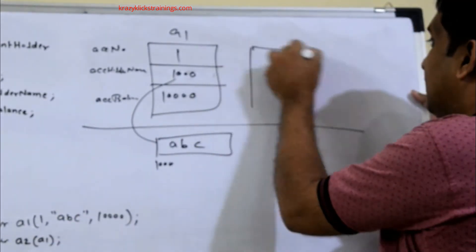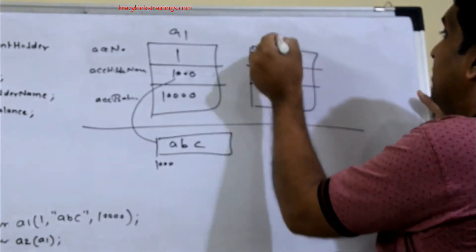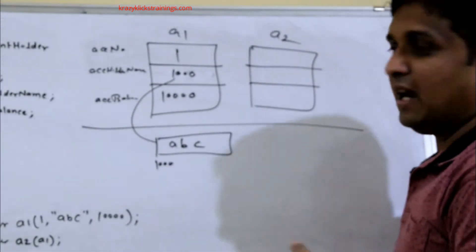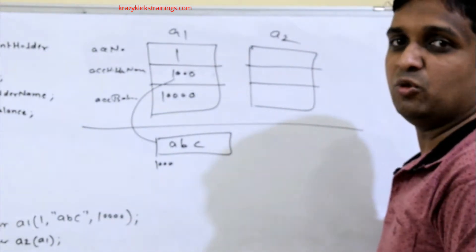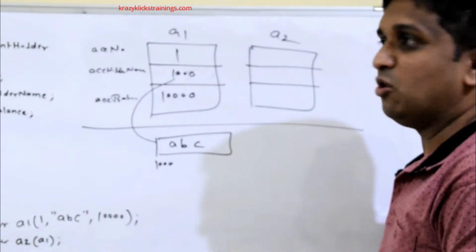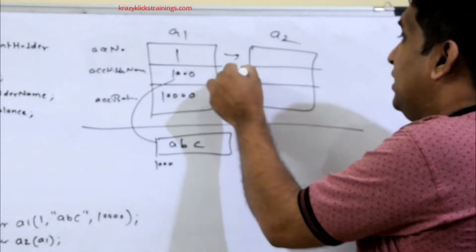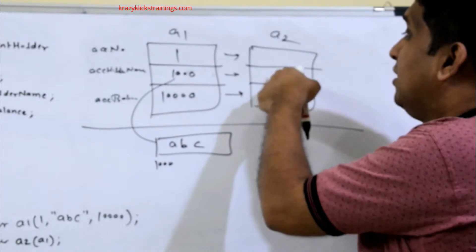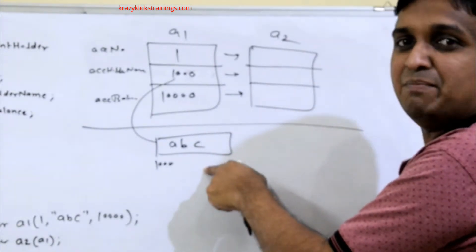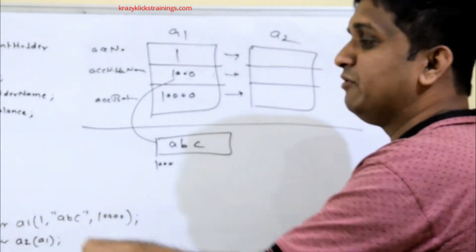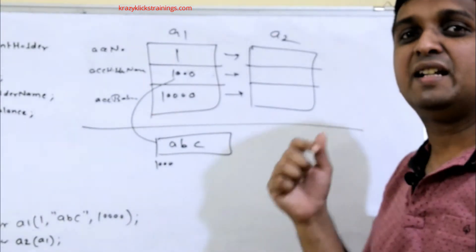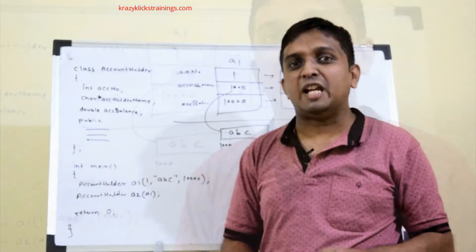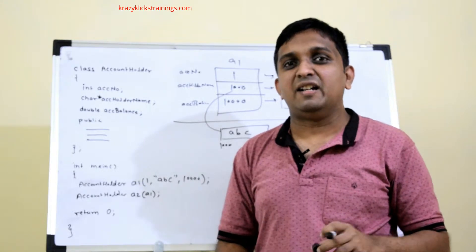When a2 object is declared, it takes separate 16 bytes and the compiler's copy constructor gets called. The compiler's copy constructor does a shallow copy, copying members as-is. This results in two pointers pointing to the same memory block. When destructors are called for each object, they both try to delete the same memory block, leading to a runtime error.